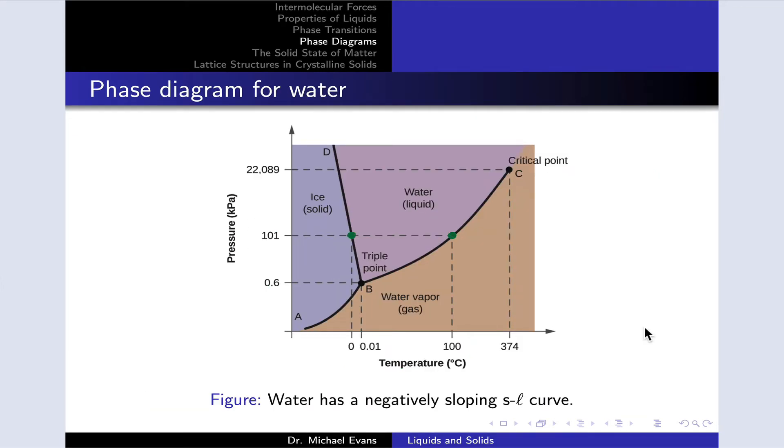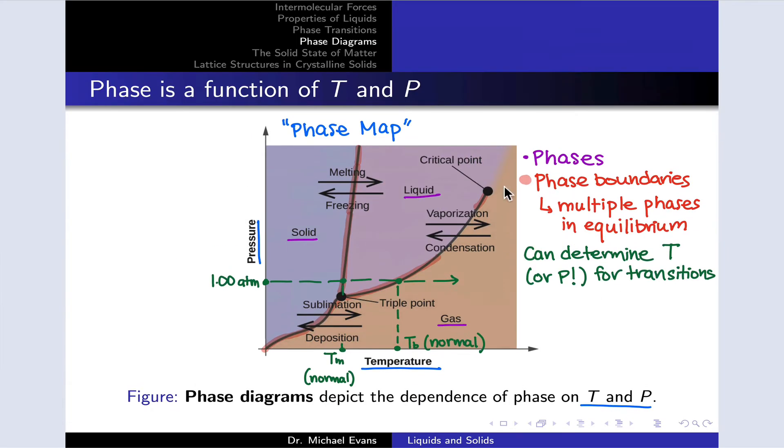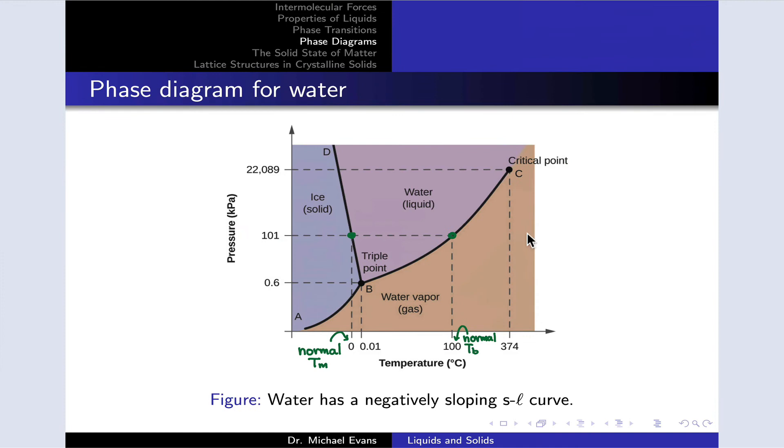This slide shows the phase diagram for water, which has some really interesting features that will help us deepen our understanding of phase diagrams. These dotted lines indicate where the normal melting and boiling points are, at the usual positions of zero degrees Celsius and 100 degrees Celsius.